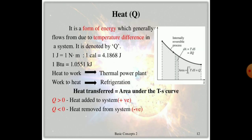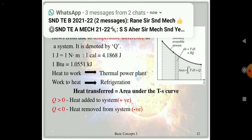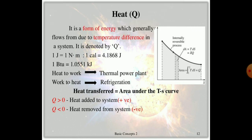Heat plays a very important role as an energy factor in engineering thermodynamics. It is a kind of energy that generally flows due to a temperature difference within the system, and is always denoted by Q. One kilocalorie is always equal to 4.1868 joules. Heat to work conversion occurs in a thermal power plant, and work to heat conversion occurs in refrigeration. Heat transfer is always equal to the area under the TS diagram.